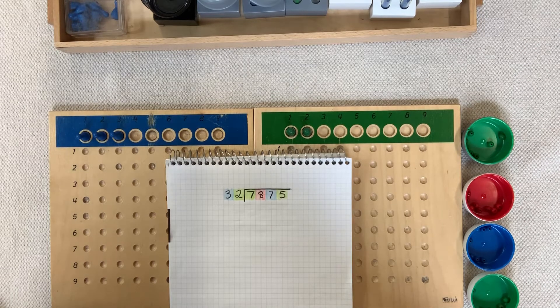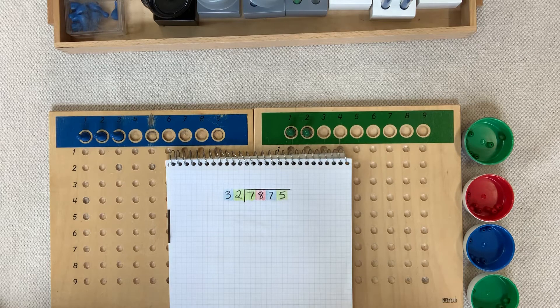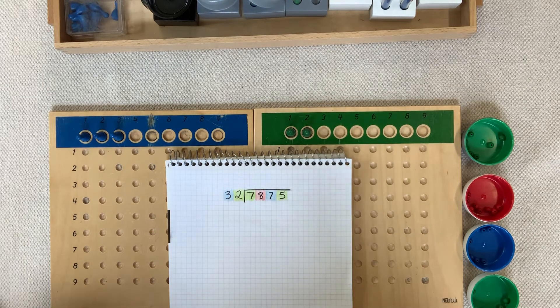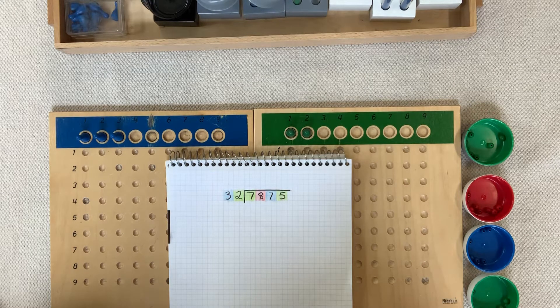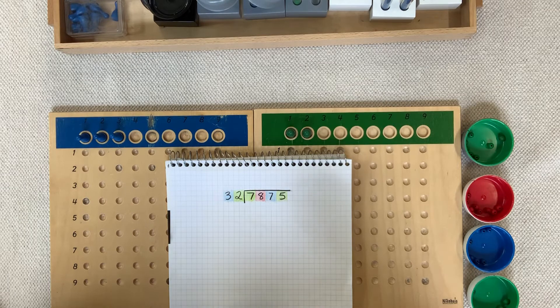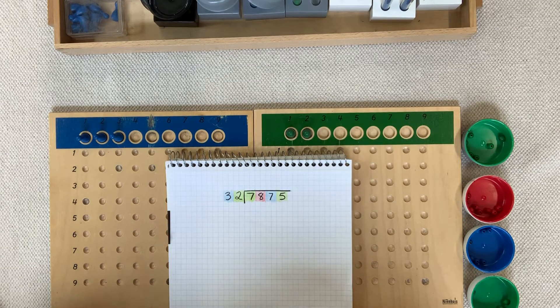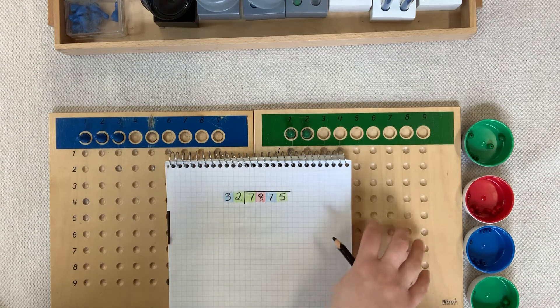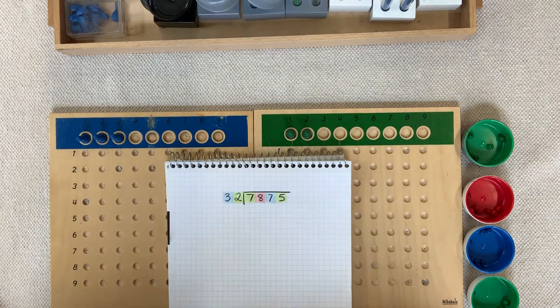This presentation is called Division with Racks and Tubes No. 6, but really it's exercise No. 3, Part C. Estimating each digit of the quotient using the material only as a guide to verify our answer. That's just a fancy way of saying we're now going to be doing this work only on paper, not with our boards. We're going to use the material to help check our answer. So let's begin.